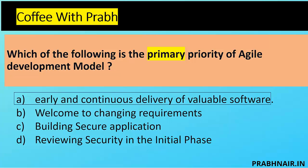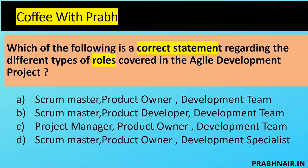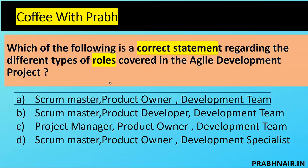Next coffee shot: Which of the following is a correct statement regarding the different types of roles in Agile development? Option A — Scrum Master, Product Owner, Development Team — that is true. Option B — Scrum Master, Product Developer — 'Product Developer' is not a recognized term. Option C is missing the Scrum Master role. Option D replaces Development Team with 'Development Specialist,' which is incorrect. The correct answer is A: Scrum Master manages overall delivery, Product Owner oversees the project, and Development Team builds the product.